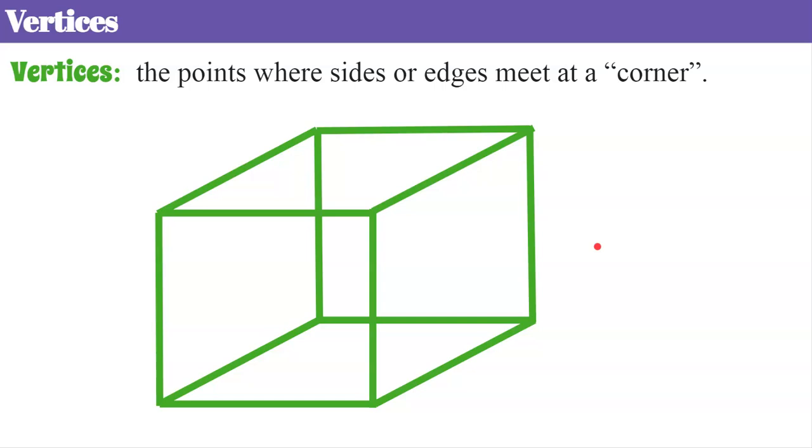Now let's talk about the vertices. The vertices, that's plural, singular would be vertex and those are the points where the sides or the edges meet at a corner. You can also think of them forming angles.